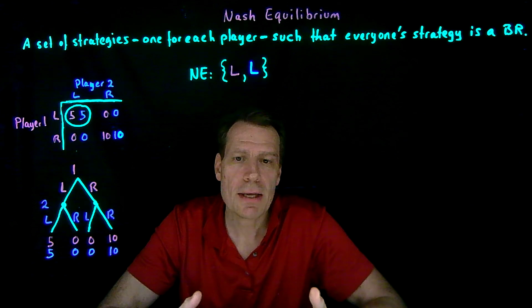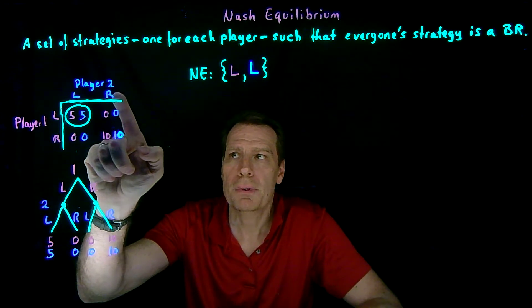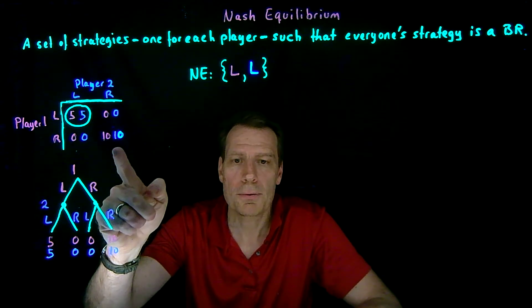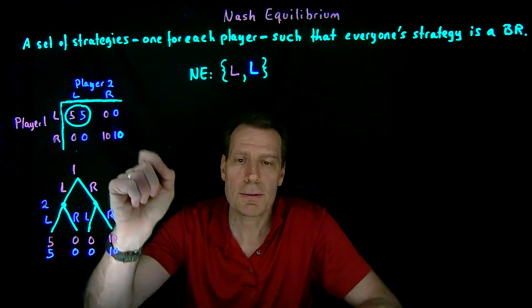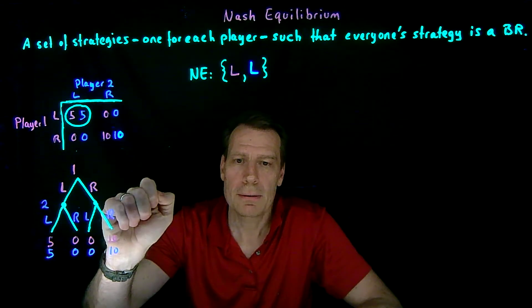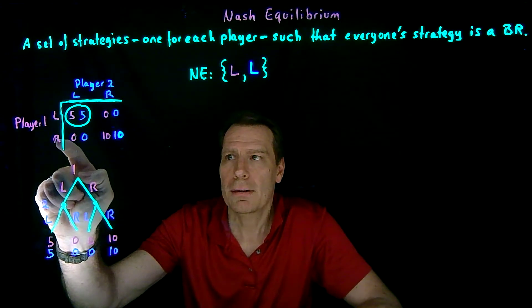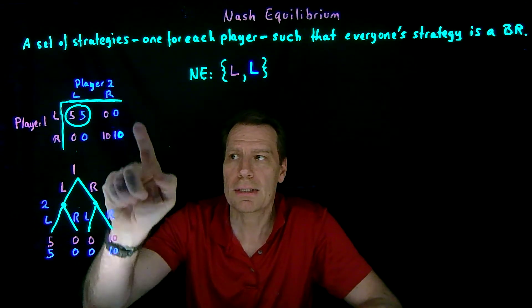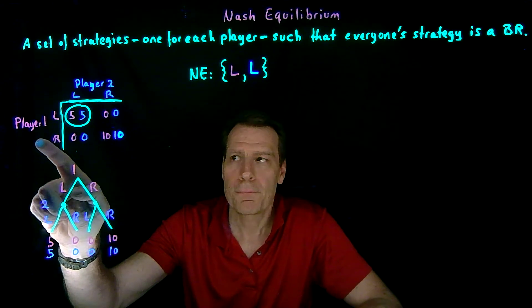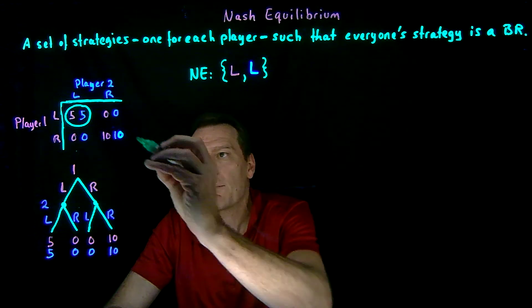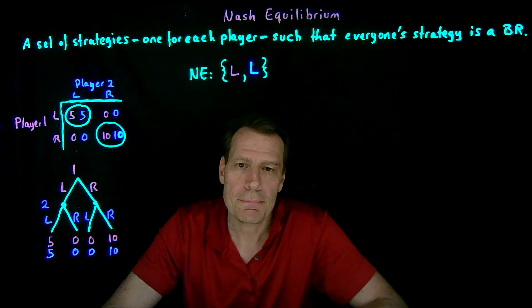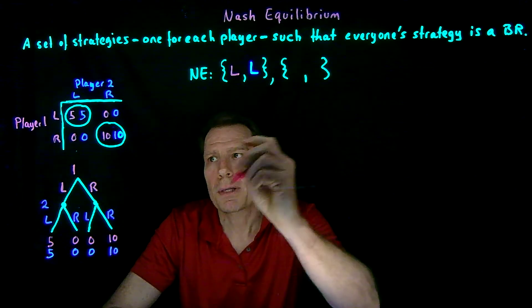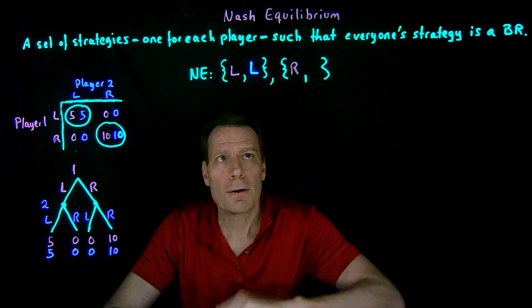Then we can check if there's another Nash equilibrium. What if player two plays right? Player one knows he's going to end up in this column, choosing between ten and zero — ten is better, so right is the best response to right. If player one goes right, player two knows she's going to end up in this row, choosing between zero and ten — ten is better, so right is a best response for her as well. So when both are playing right, we found another Nash equilibrium: player one plays right, player two plays right.